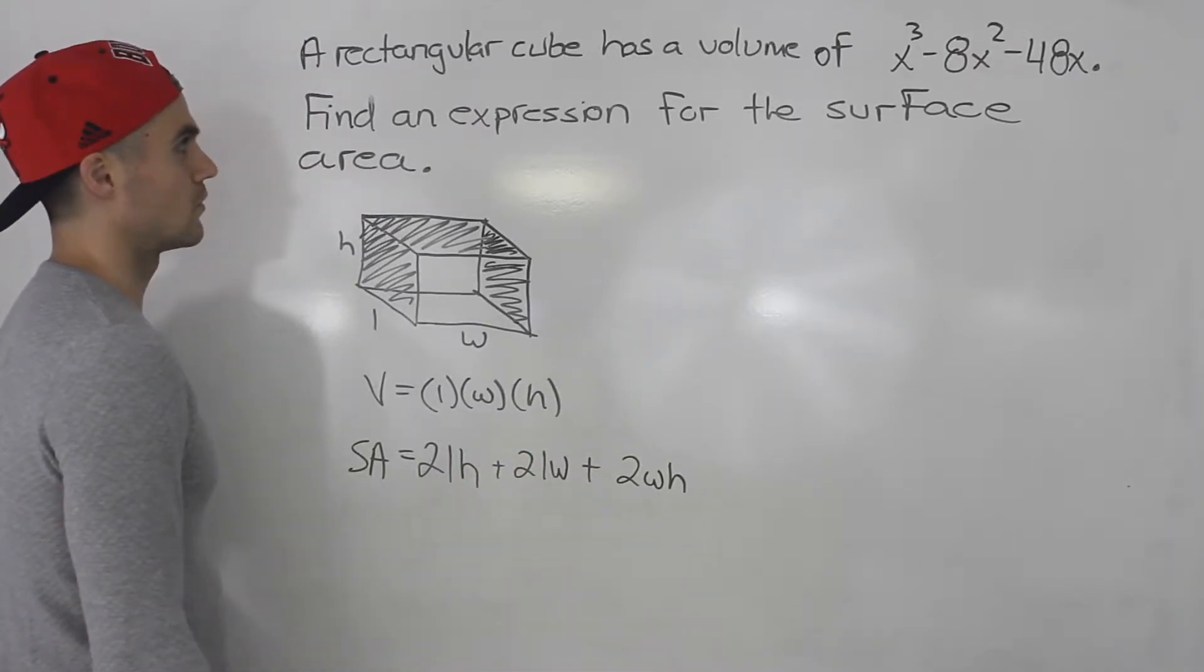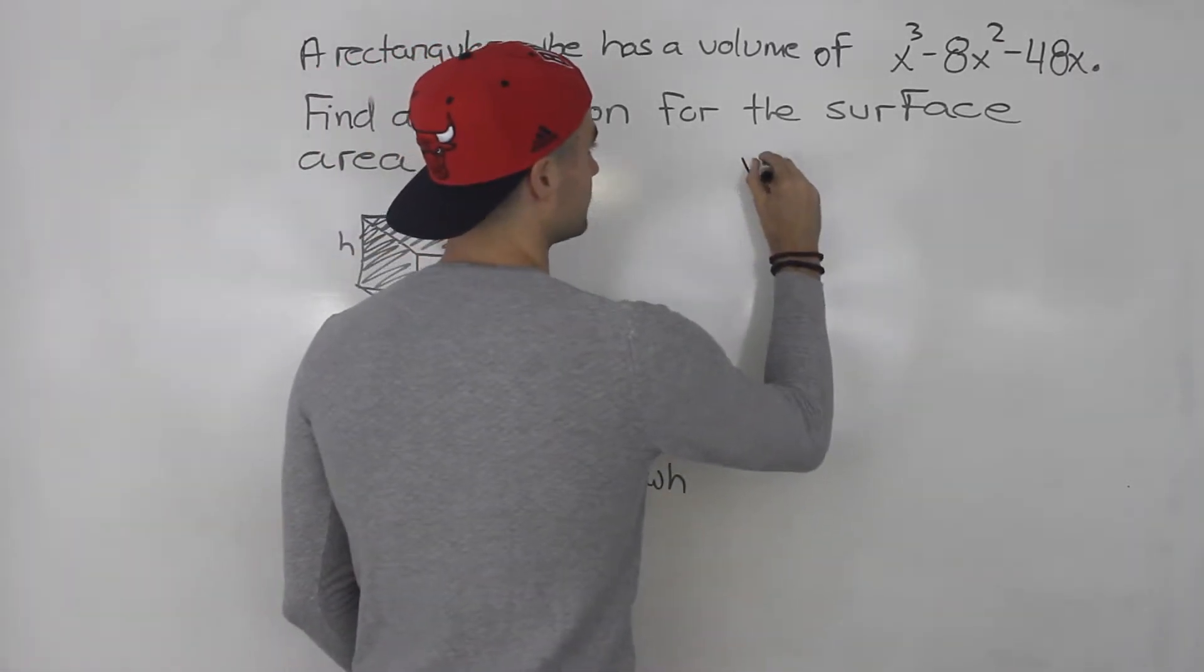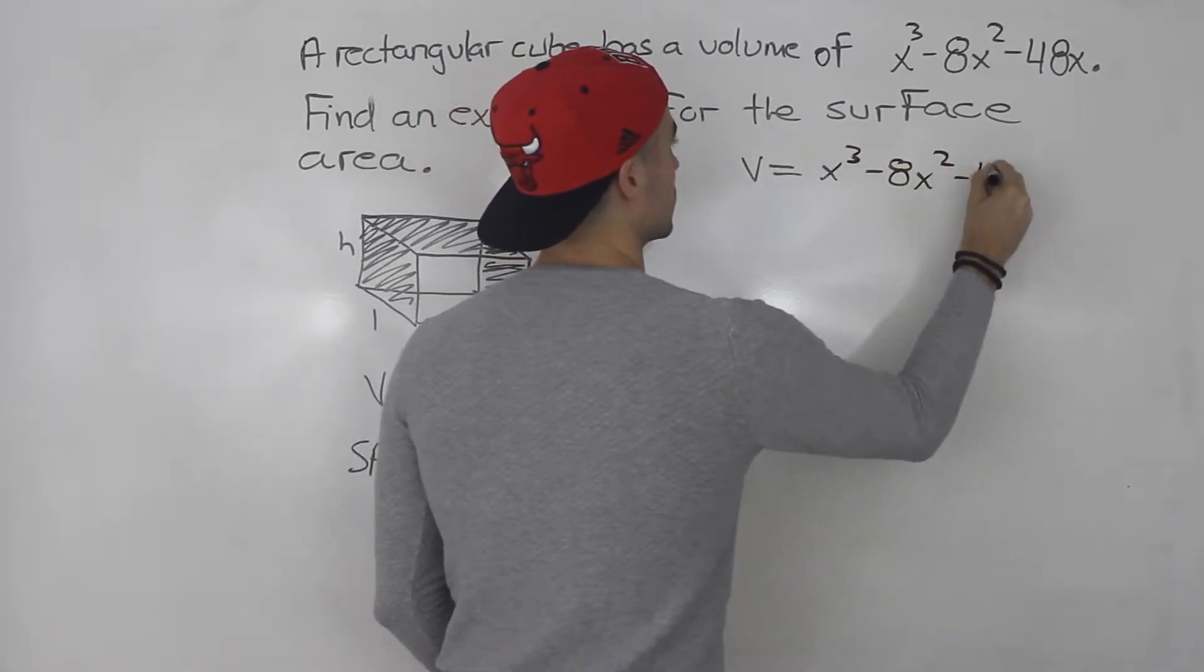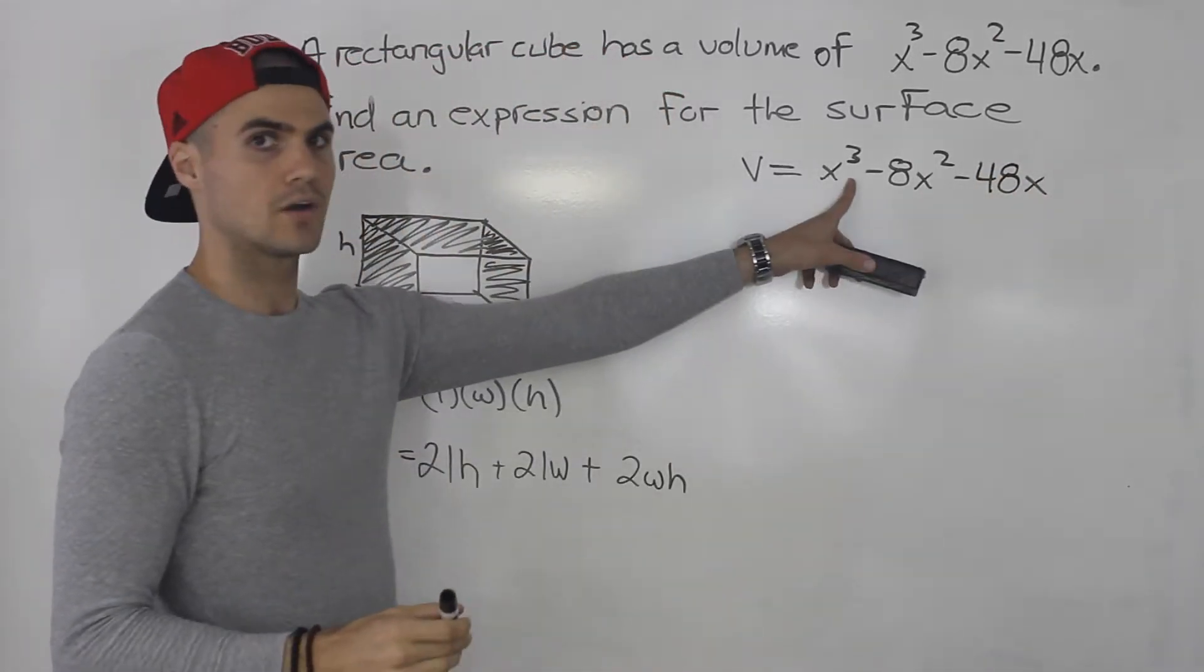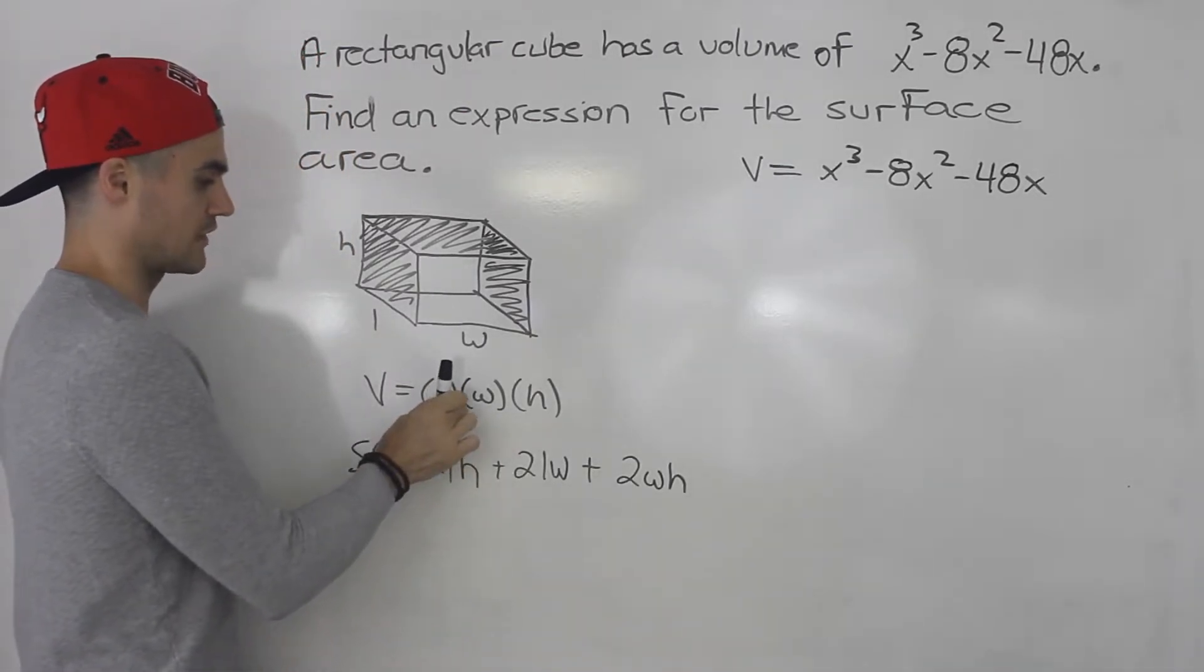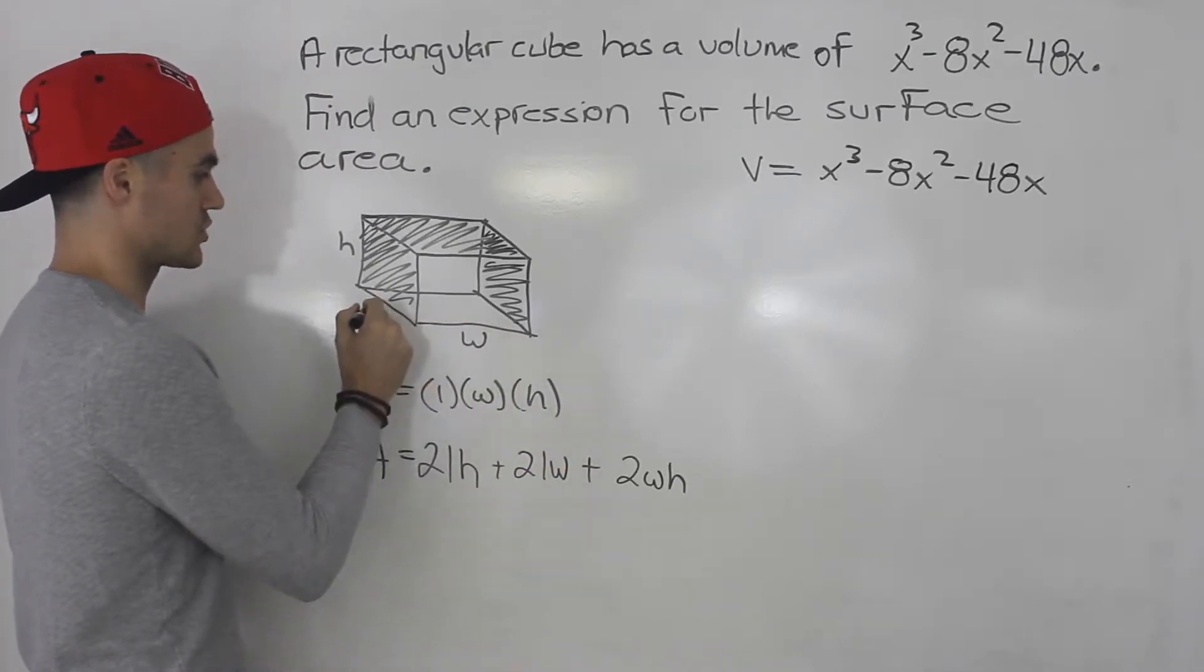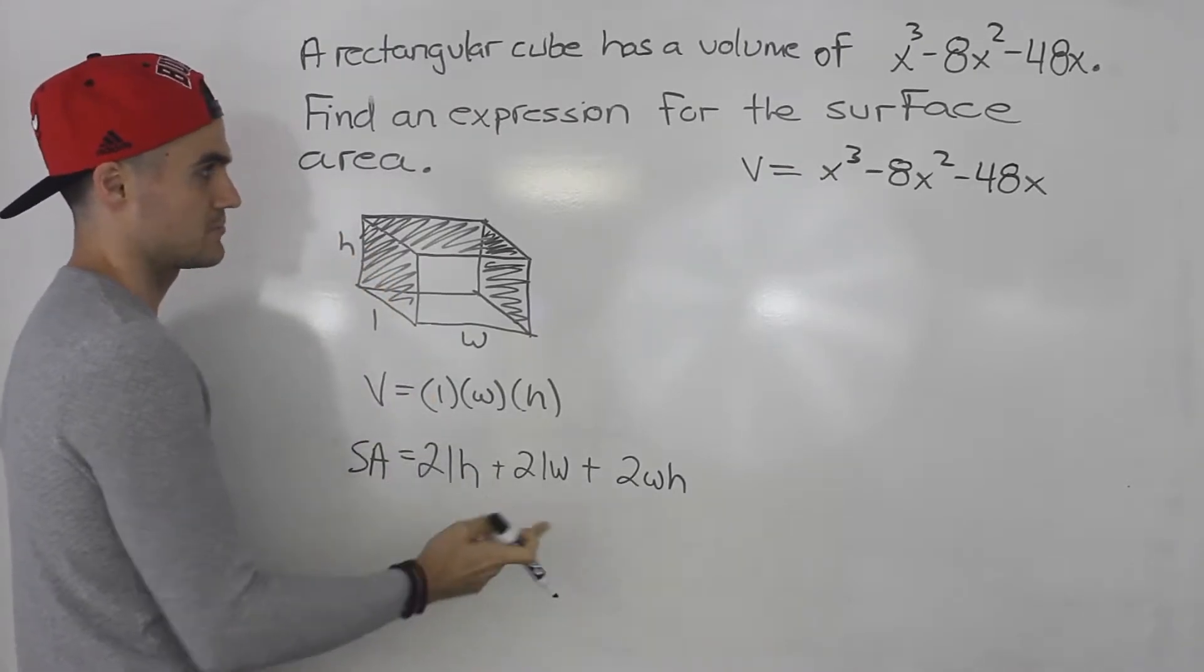So we're told that the volume of the cube is equal to x cubed minus 8x squared minus 48x. So if we can maybe take this volume here, this expression, and factor it into three terms, we would have an expression for the length, the width, and the height. And then we could take those expressions for each side and plug it into this surface area formula and then just simplify that.